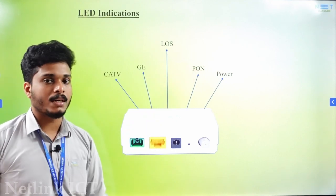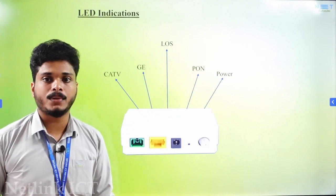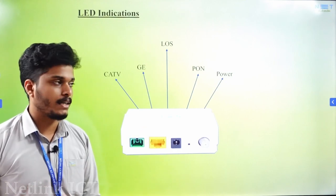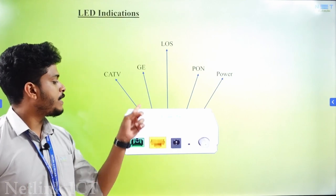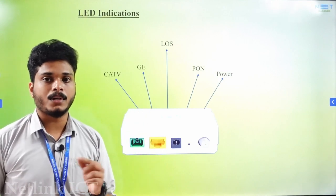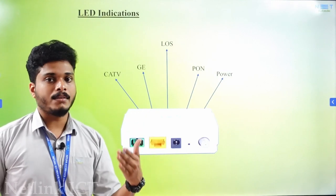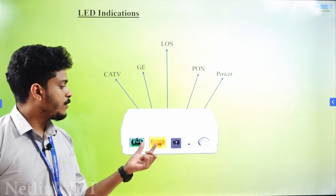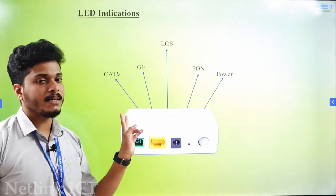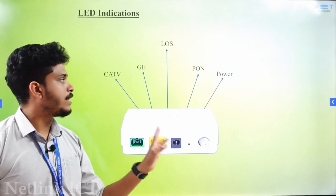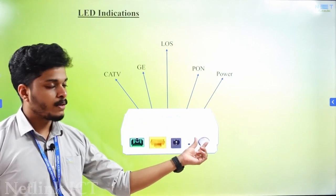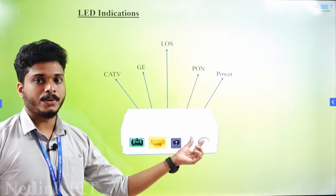The next pin is LOS — there is a red light. Then the pin is GE, that is our LAN port. We have a LAN cable connected here; if it is connected to a computer, that is GE. Then the next pin is CATV — that is cable television. We have cable TV output available.